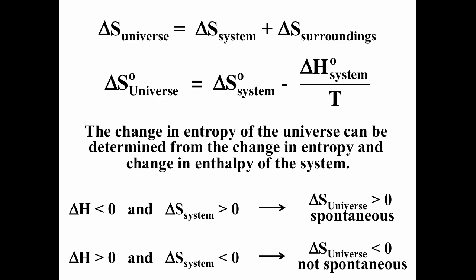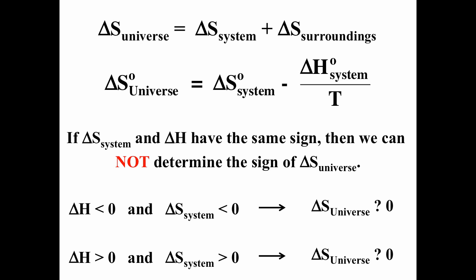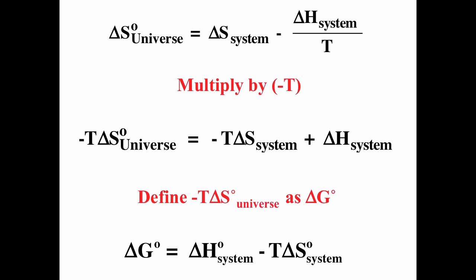If delta H is negative and delta S of the system is positive, then delta S of the universe is positive and the process is spontaneous. If delta H is positive and delta S of the system is negative, then delta S of the universe is going to be negative — it's going to be non-spontaneous. It's important that you keep track of these subscripts: universe, system, surroundings. If there is no subscript listed, like for delta H, that means it's for the system. If delta S of the system and delta H have the same sign, then we cannot determine the sign of delta S of the universe — it's going to depend on temperature.